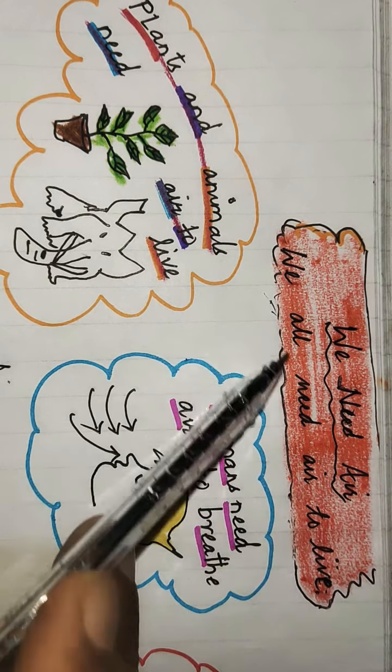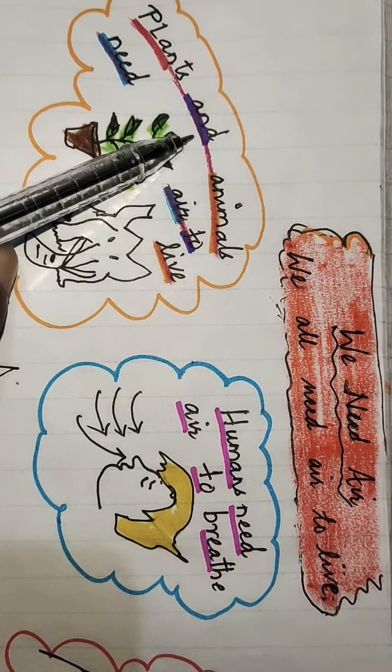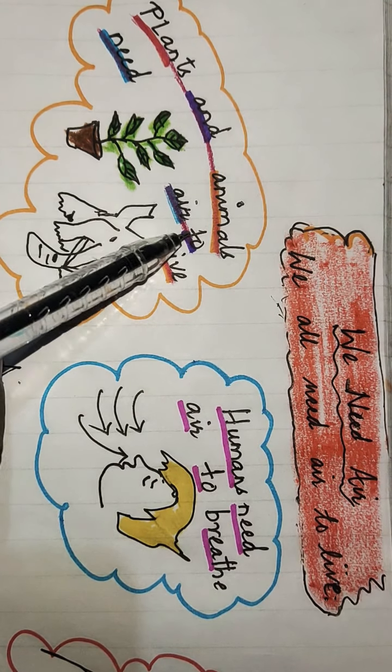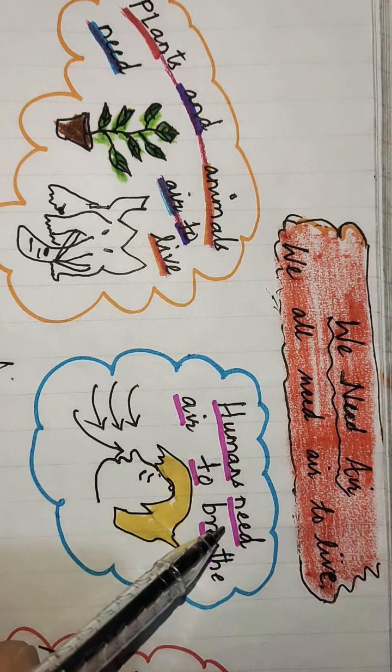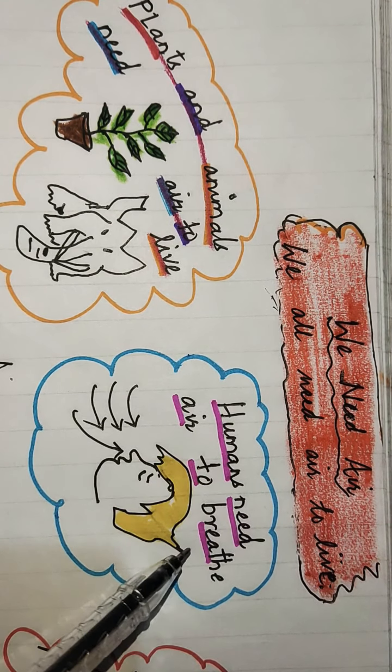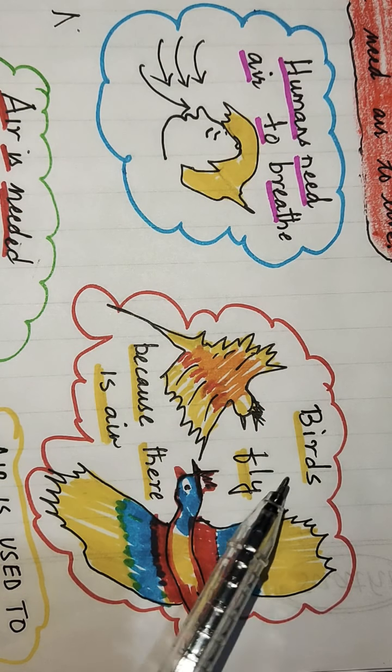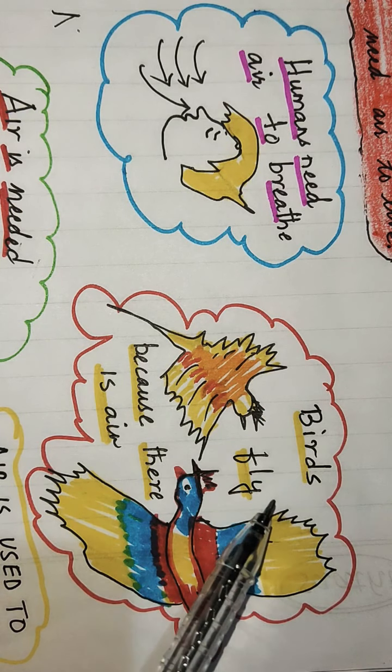We all need air to live. Let us take an example. Plants and animals need air to live. If there is no air, then plants and animals will die. We humans need air to breathe.